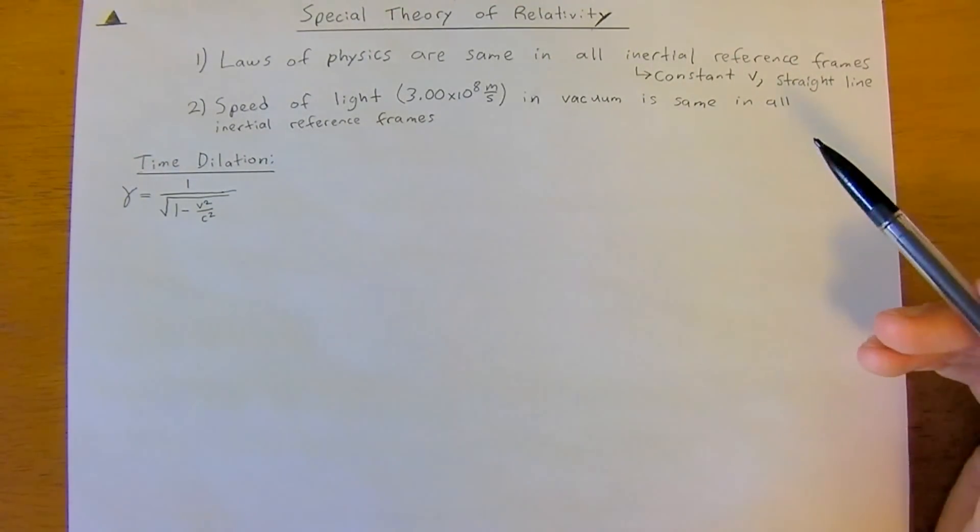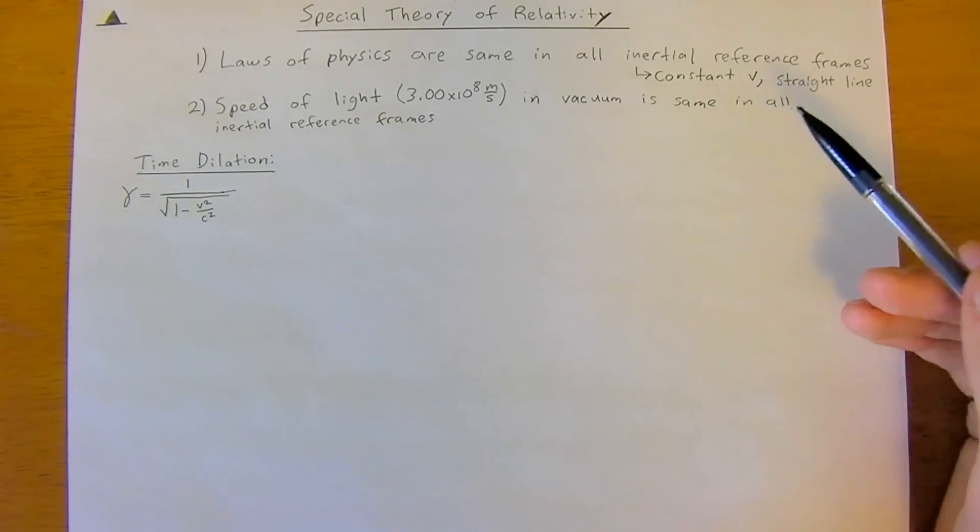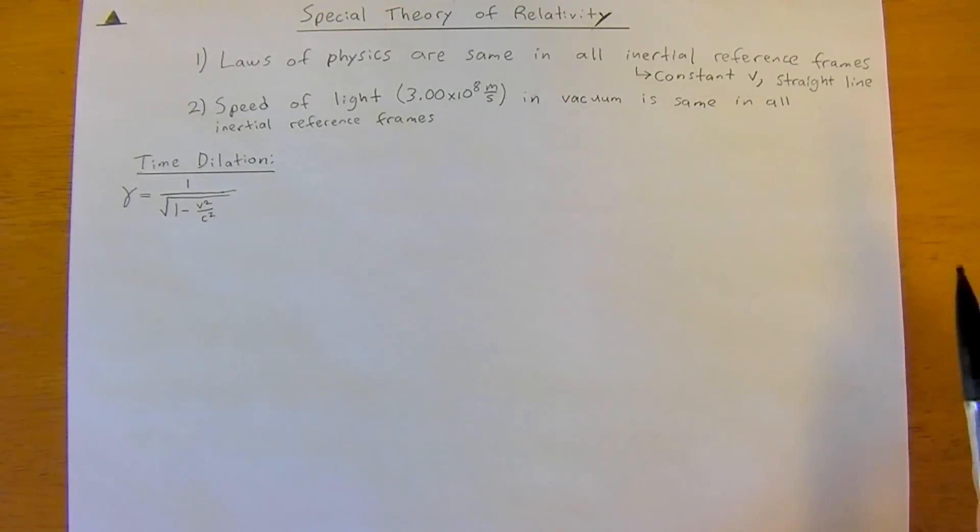So it doesn't matter what speed you're traveling at, the speed of light is always the same. So if you're in a car going near, or a plane going near the speed of light or a spaceship, and you turn on a flashlight, the flashlight doesn't have your initial velocity plus the speed of light. It is just the speed of light.